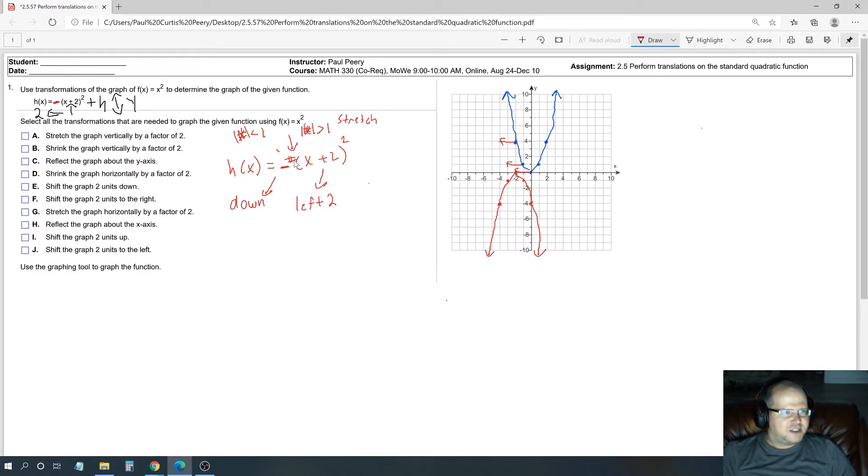So the only modifications to this from the original one is instead of it being like the blue one, which is facing up, it's like the red one is facing down. And instead of the vertex being centered on the origin, instead it's been shifted 2 to the left. So it doesn't look like it's being stretched. No vertical manipulation, so there's nothing there.